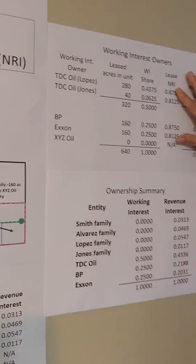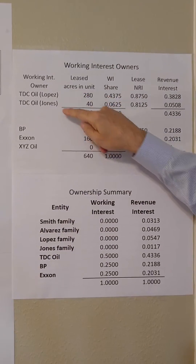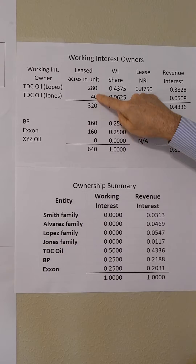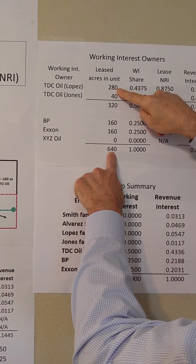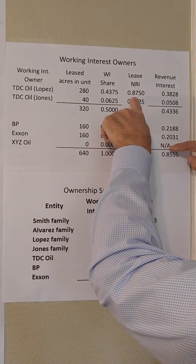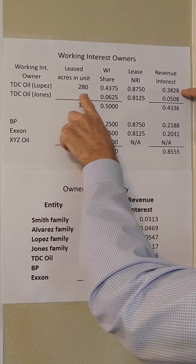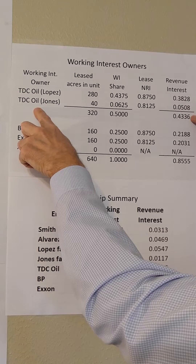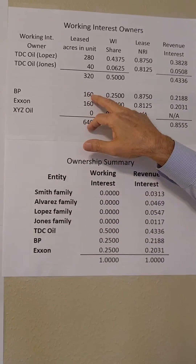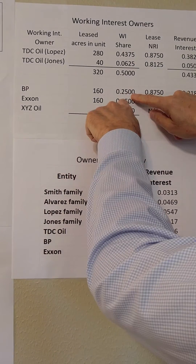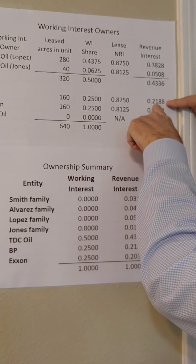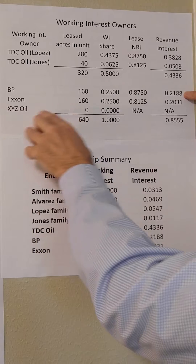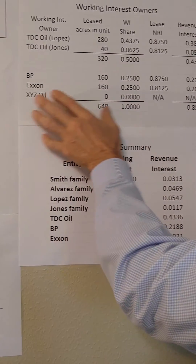Now let's talk about the working interest owners. TDC Oil is the operator — they have two leases with different acreage and different net revenues in each. They own 280 acres, so 280 divided by 640 is 0.43. 0.43 times the lease net revenue on the Lopez lease is 0.38, and on the Jones lease it's a little different at 0.05. This gives TDC Oil their total working interest and revenue interest. BP owns 160 acres in the unit — that's 0.25 — times their lease net revenue of 0.875, giving a revenue interest of 0.2188. Exxon is going to have 0.02. XYZ Company to the north is not involved because they don't have a lease in the unit.